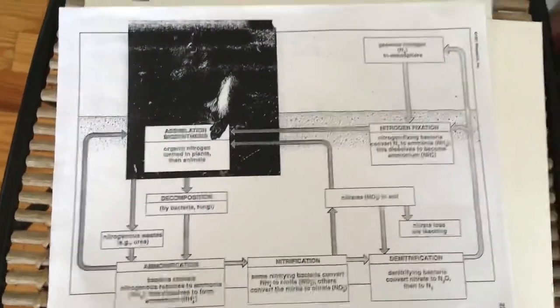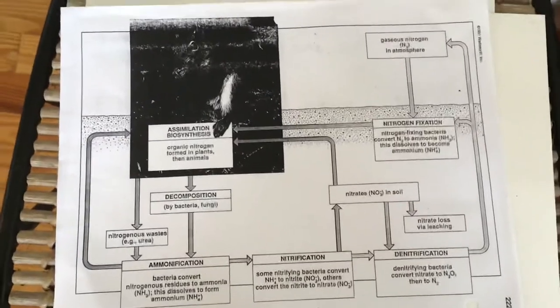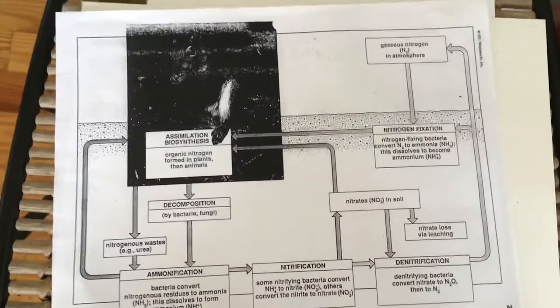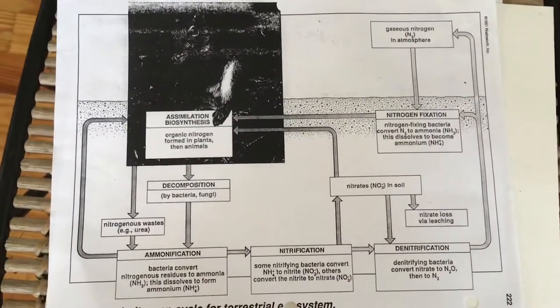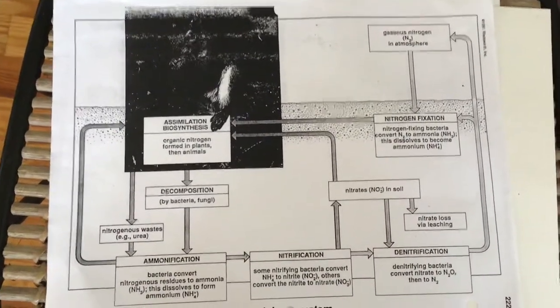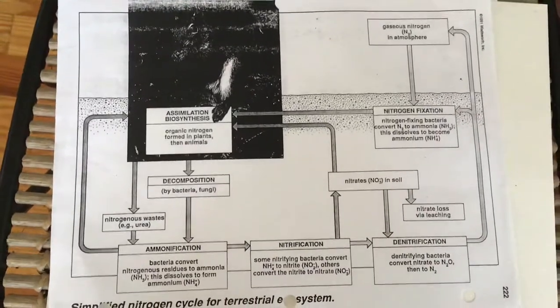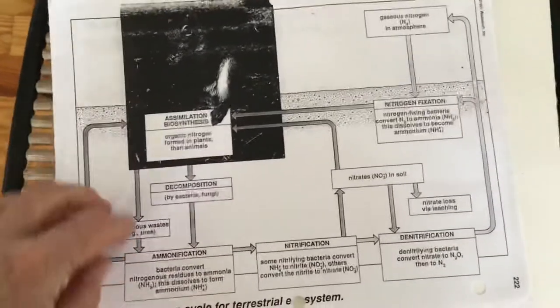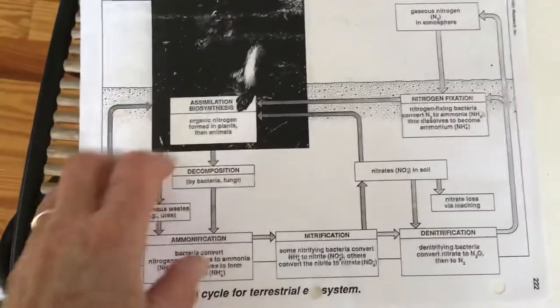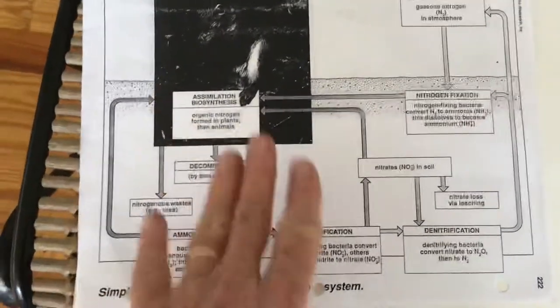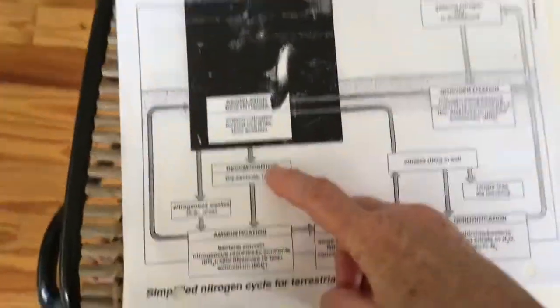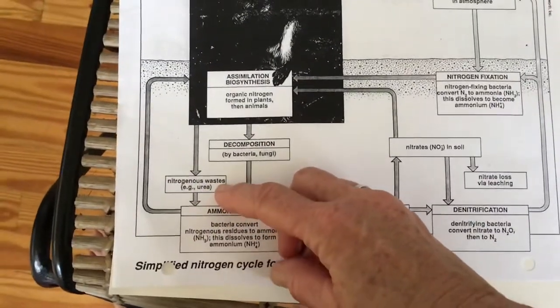You might remember that the main organic molecule that uses nitrogen is proteins. It's going to be proteins that are both in plants and animals. Eventually those animals are either going to have waste products or the plants are going to have leaves that die, and the animals of course are going to die. They are going to be returned back to the soil via decomposition and waste materials.